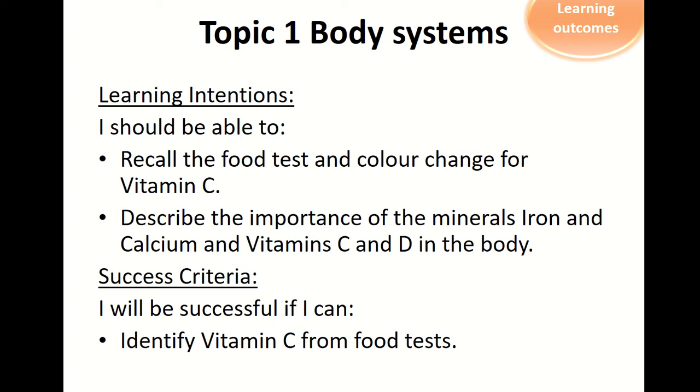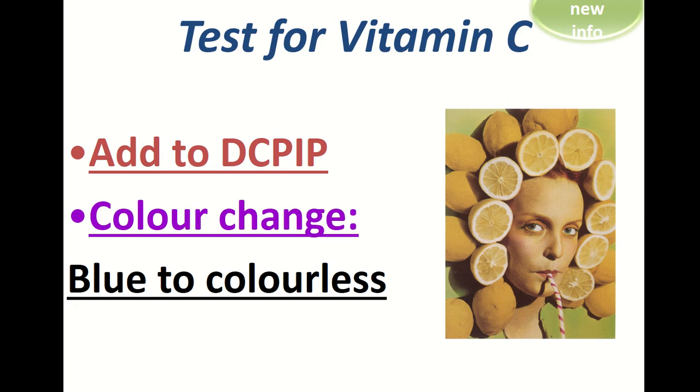So the test for vitamin C that we're going to be looking at today is going to involve a blue inky liquid known as DCPIP, which will change from blue to colorless or from blue to the color of the actual juice we are testing. If vitamin C is present, the more vitamin C, the faster this change takes place.